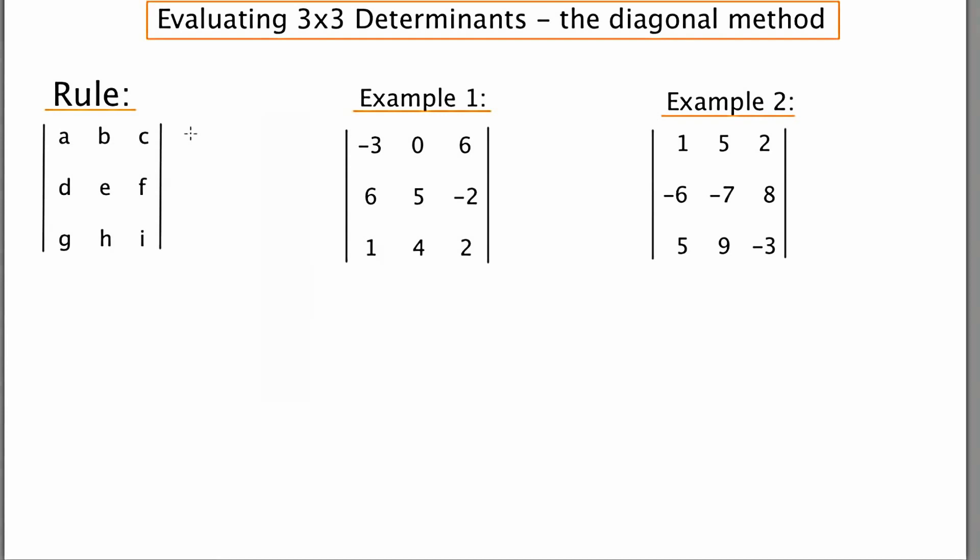So I'm going to say A, D, G as I copy the first column over again. And then I'm going to do B, E, H, B, E, H.